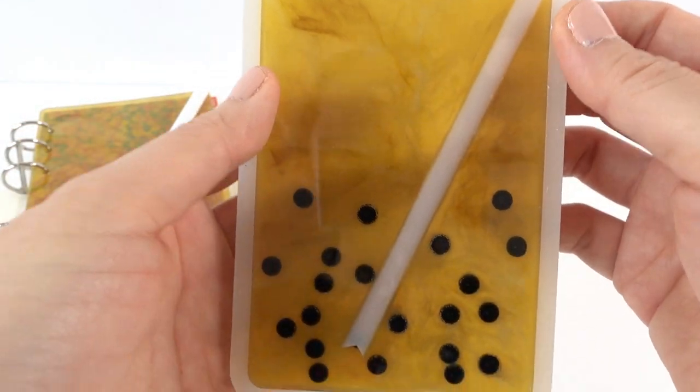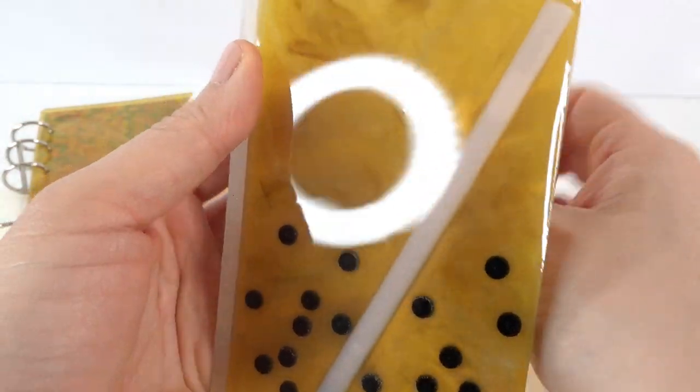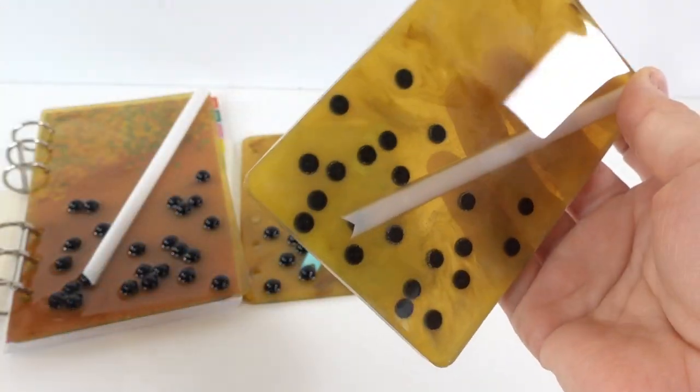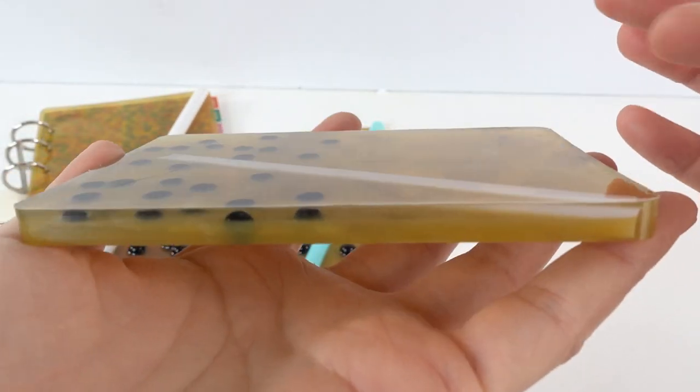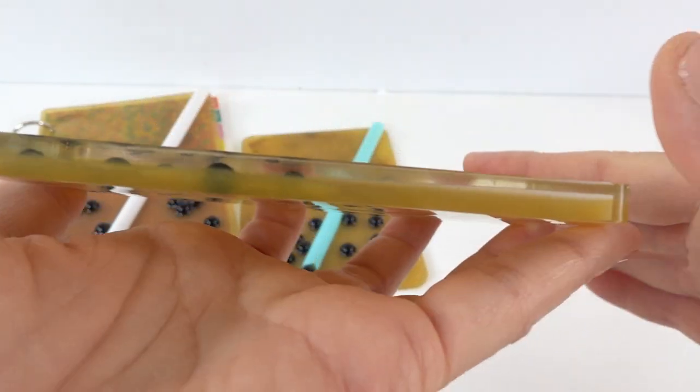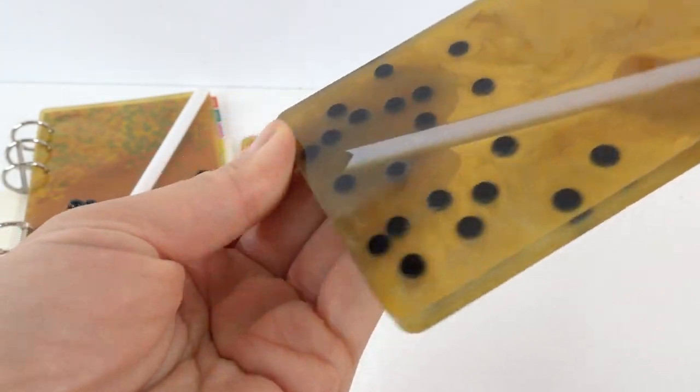And this one is our photo frame. So let's go ahead and take it out. In this photo frame, we actually covered an entire straw. So this is nice and flat. But you can see the bobas and the straw inside.